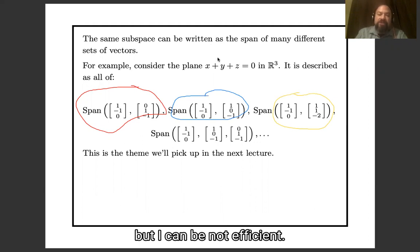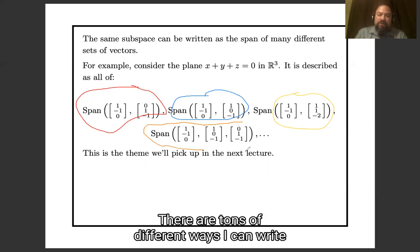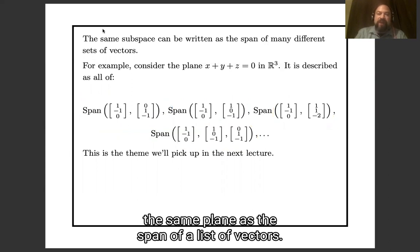And using two vectors is efficient, but I can be not efficient if I want to be not efficient. I can also write it as the span of these three vectors.